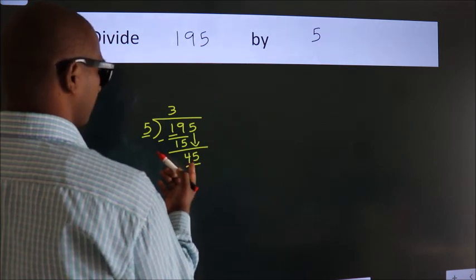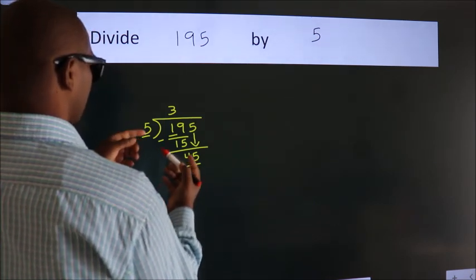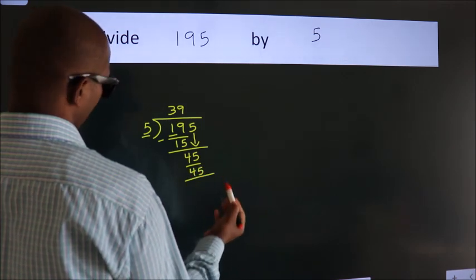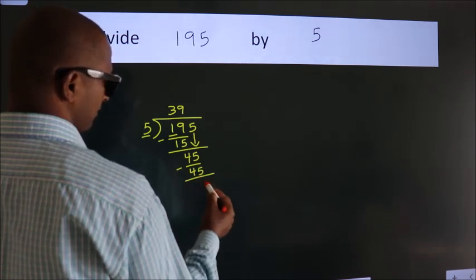When do we get 45 in the 5 table? 5 nines, 45. Now we subtract. We get 0.